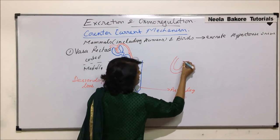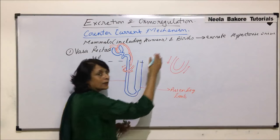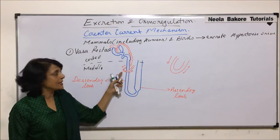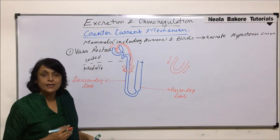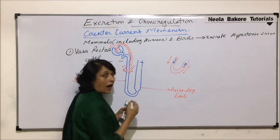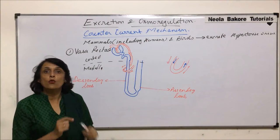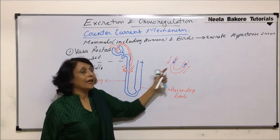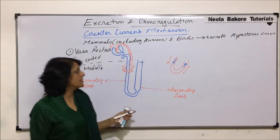There are two parts of this capillary: one arm of the loop of vasa recta brings the blood towards the medullary region, and the other arm takes blood towards the cortex. The fluid or blood in these two arms flows in opposite directions very close to each other — that is counter-current flow. Because the direction of flow in both arms is opposite, we call it counter-current mechanism.